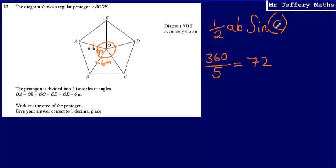Now I can use half AB sine C to work out the area of the triangle. So half multiplied by the two lengths trapping the angle: half times 6 times 6 times sine of the angle being trapped, which is sine 72.